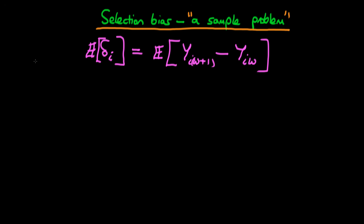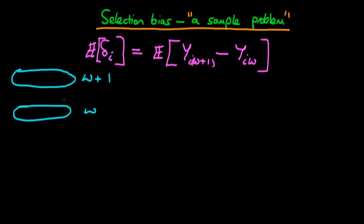The problem is that, in general, we don't actually get to view this potential level of outcome. What we actually have is those individuals who chose treatment W+1, and those individuals who chose W. And if we just look at the difference in means of the outcome variable Y between these two groups, this is not necessarily going to represent the average causal effect. The difference in means doesn't represent the average causal effect, because essentially we are comparing apples with oranges.